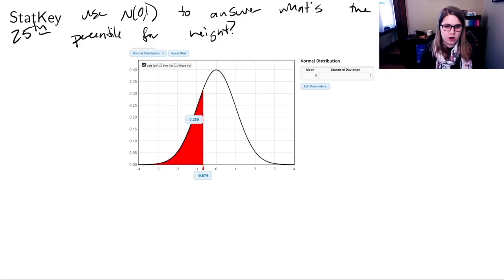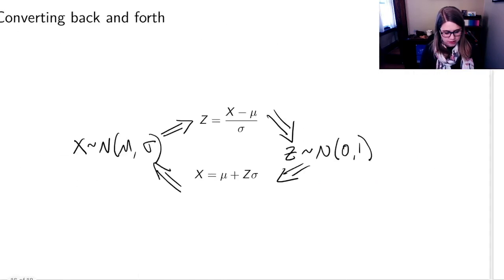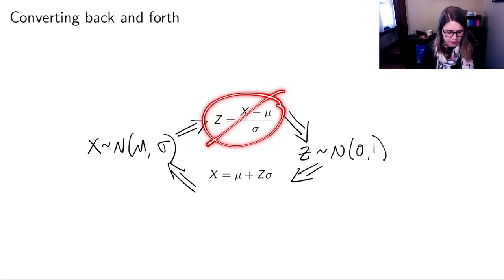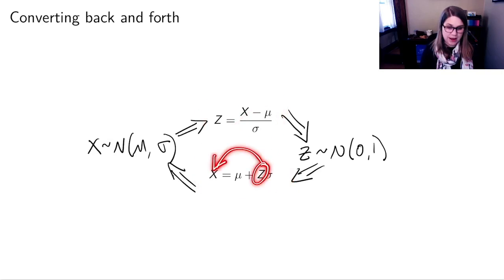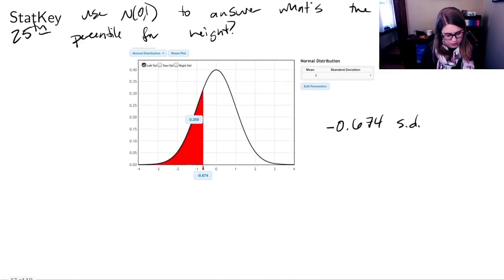For a normal distribution, negative 0.674 standard deviations is the 25th percentile for height, but that's not a height. I want to know it in inches. And so I need to use the non-z-score equation. Not that one, but this one, the one that takes a z-score and makes it back into the data space. So I'm going to do x is equal to mu plus z sigma.